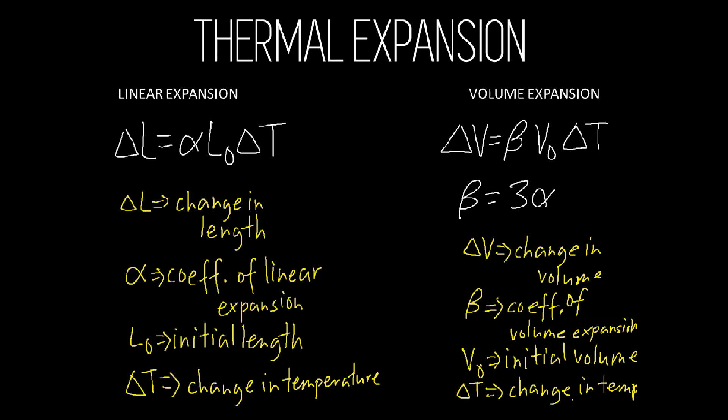Linear expansion, as you can see on the screen, is the change in length or other linear dimensions of an object due to a change in temperature. It is given by this formula: delta L is equal to alpha times L0 times delta T, where delta L is the change in length, alpha is the coefficient of linear expansion, L0 is the original length, and delta T is the change in temperature.